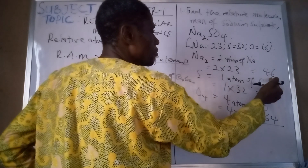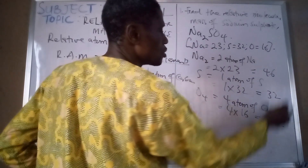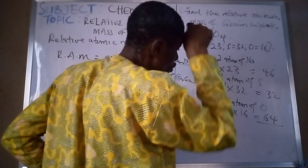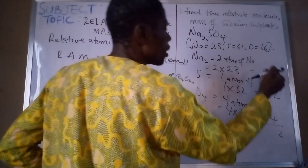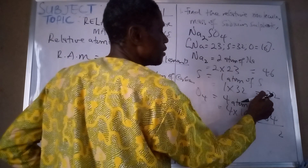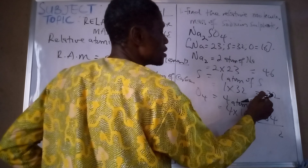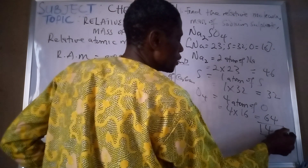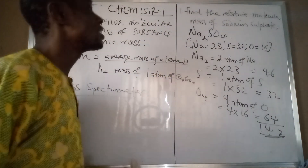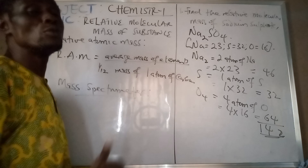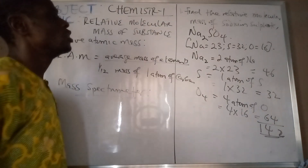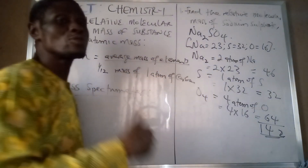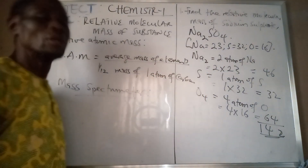So when you sum them: 46 plus 32 plus 64 gives us 142. So the relative molecular mass of sodium sulfate, or sodium tetraoxosulfate-VI, is 142. Let's do another one.